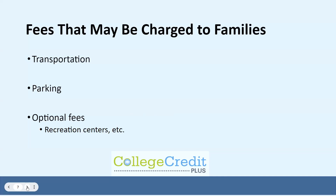There are a few fees that families may still be expected to cover. If a student enrolls in more classes than the state is going to cover, then the family will be responsible to cover the full costs for those additional courses. CCP also does not cover the cost of transportation or parking for students who take classes on a college campus, and there may be additional optional fees for things such as a recreation center or other activities that a student might opt into.